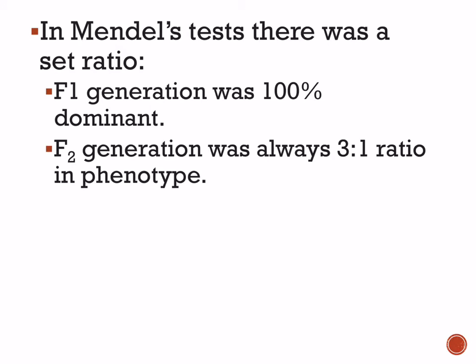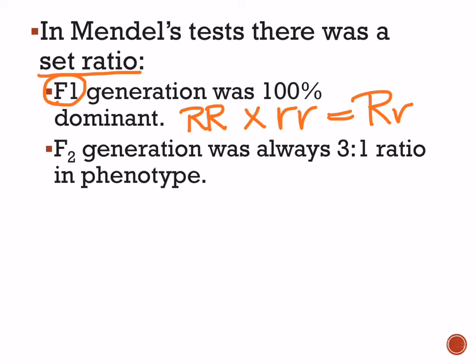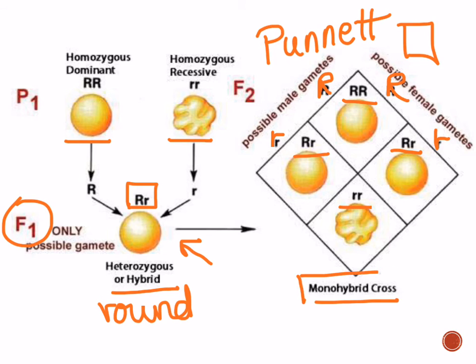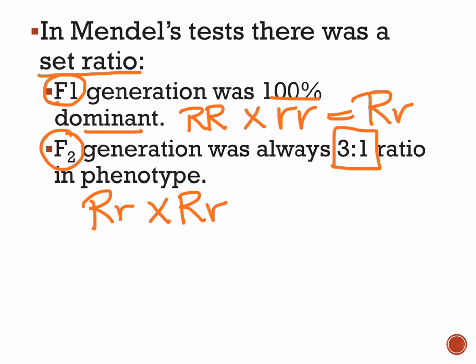When Mendel made these predictions and then actually crossed the pea plants and looked at the results, he found a set ratio — exactly what he had predicted. In the F1 generation, which was homozygous dominant crossed with homozygous recessive, all offspring were heterozygous and 100% dominant. But in the F2 generation — crossing two heterozygous individuals — there was always a 3 to 1 ratio in phenotype. Indeed, looking at our monohybrid cross, we have three smooth peas and one wrinkled pea: our 3 to 1 ratio.